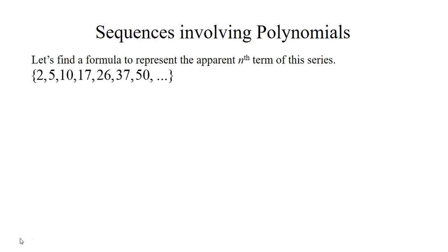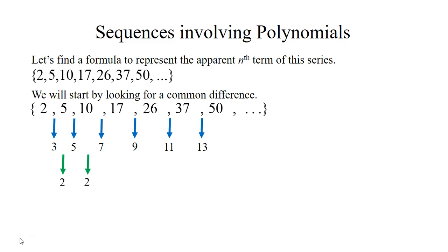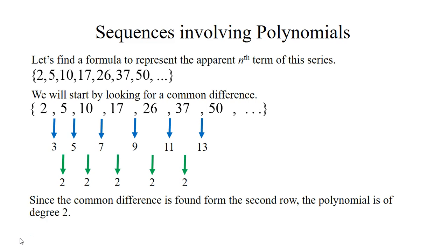Let's do an example. We have this sequence and we're going to look for a common difference. We subtract: 5 minus 2 gives 3, 10 minus 5 is 5, 17 minus 10 is 7 — we do not have a common difference. So we subtract again and we get a difference of 2 each time, which is an indicator that it's degree 2 because we subtracted twice.